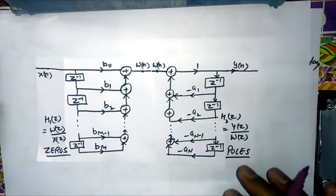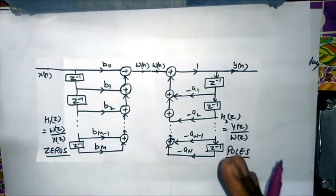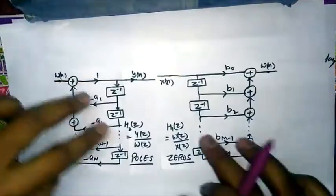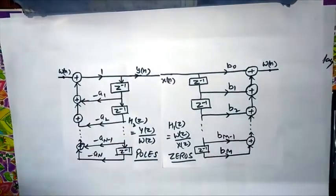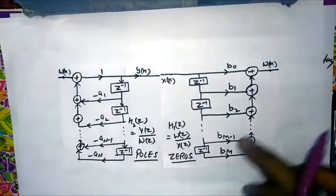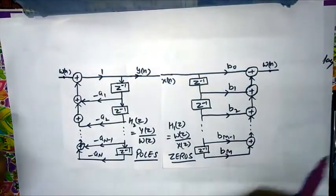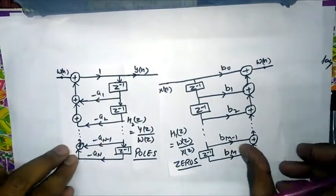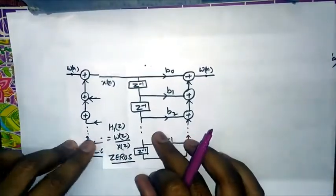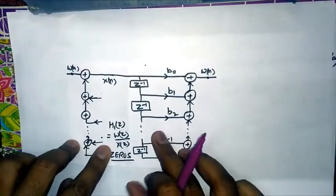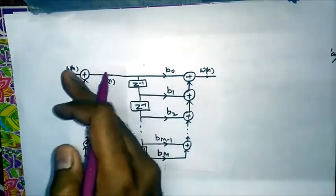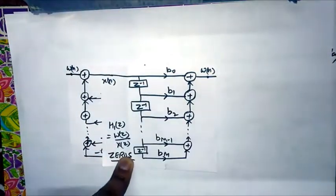In Direct Form 2, the idea is to invert this structure. Now we will implement poles first and zeros after that, so that these delays can be shared in common — a single delay working for both poles and zeros.